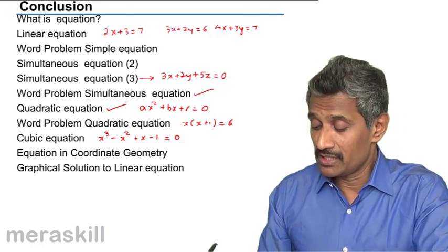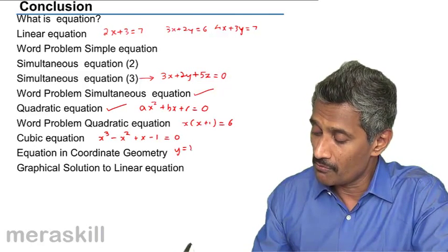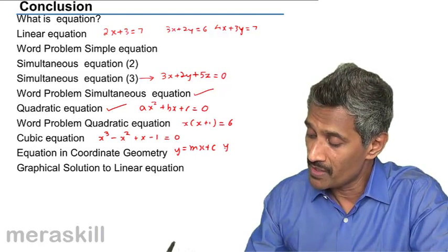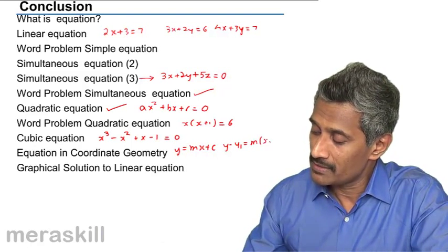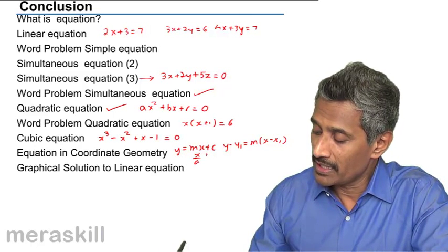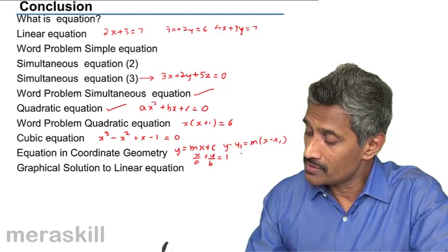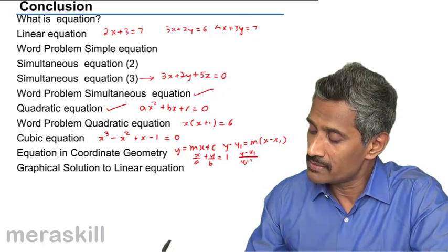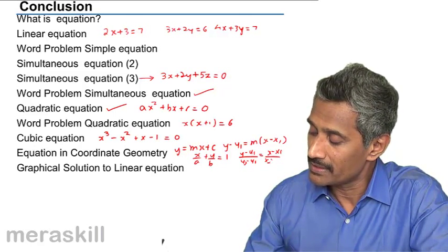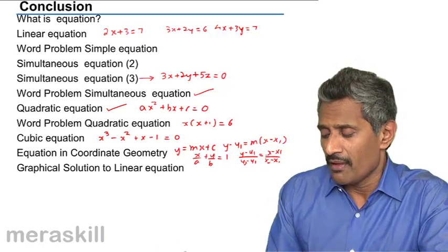Then equations in coordinate geometry: equations of the form y is equal to mx plus c, that is slope intercept form. Y minus y1 is m into x minus x1, the point slope form. X upon a plus y upon b is equal to one. And of course, y minus y1 upon y2 minus y1 is equal to x minus x1 upon x2 minus x1, which is the two point form. Then we did a number of questions based on solutions to linear equations.